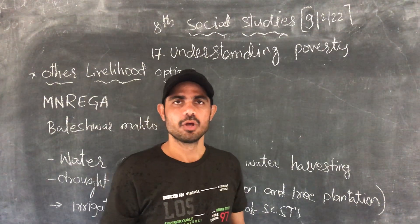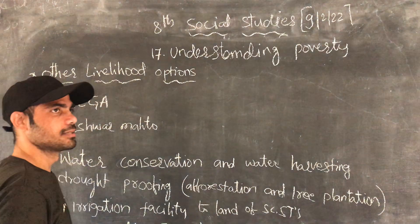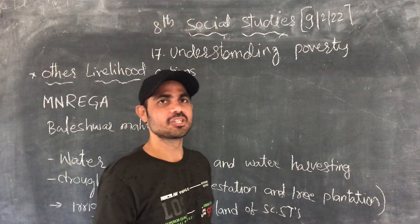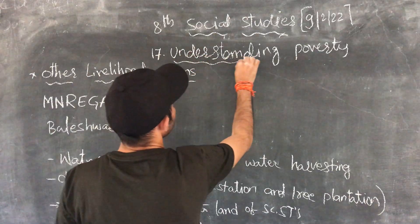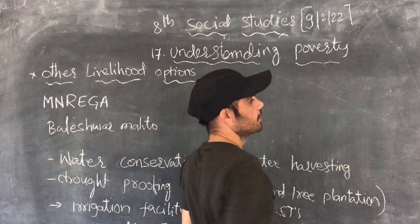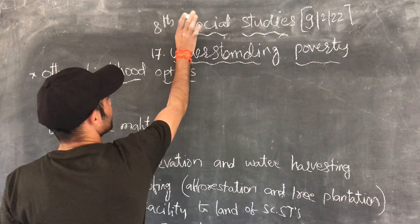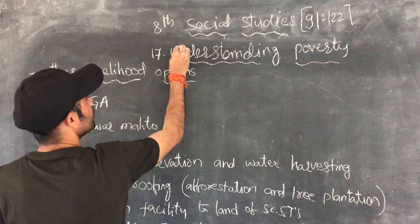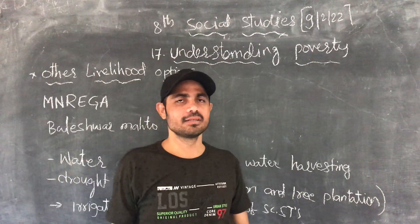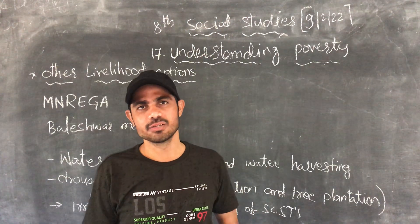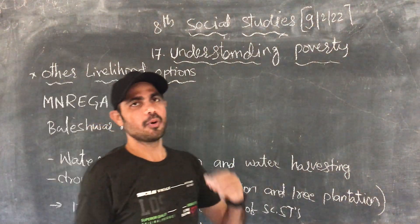Good morning students. Today we are going to discuss the IIT class 17th lesson: Understanding Poverty. What was the understanding poverty? In this lesson, Understanding Poverty, you might think it starts with a B but it is a U. In this lesson we already discussed what is meant by poverty and how can we eliminate the poverty.